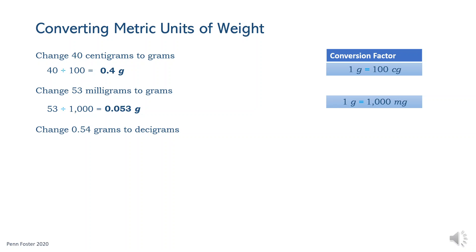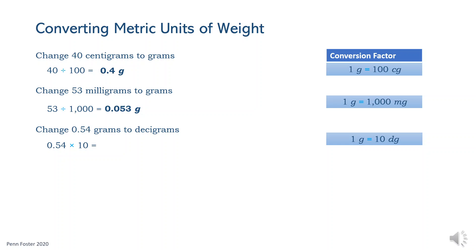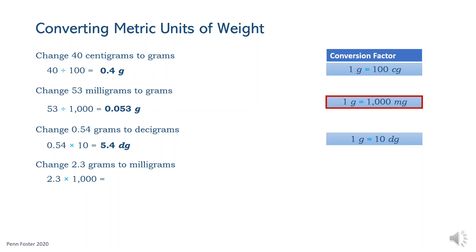Now convert 0.54 grams to decigrams. Although the given weight is in decimal, the same two steps are still followed. A decigram is smaller than a gram, therefore multiply the given weight in grams times the conversion factor 10 — that's 5.4 decigrams. The last problem calls for changing grams to milligrams. That's large to small, so multiply 2.3 times 1,000. The answer is 2,300 milligrams.